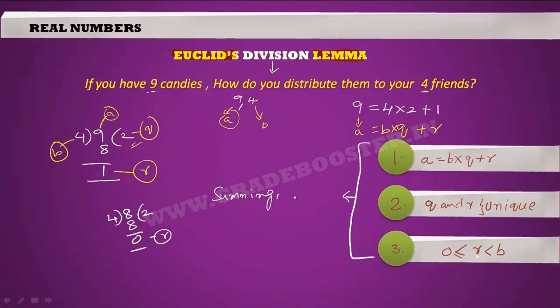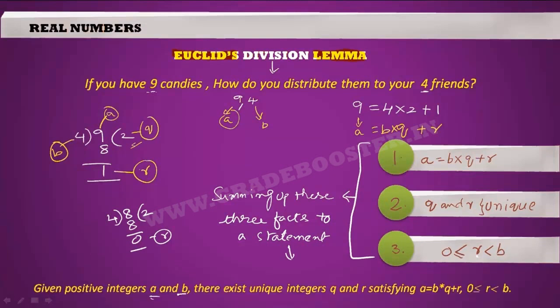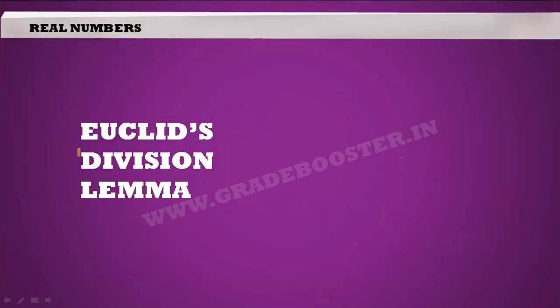These three interesting facts that are observed from division are made into a statement. Let us see it. For given two positive integers A and B, there exist unique integers Q and R satisfying A equal to B into Q plus R, where R is always less than B and R is greater than or equal to 0. So we have observed some interesting facts in the process of division and derived a statement from these facts. This statement is called a lemma.